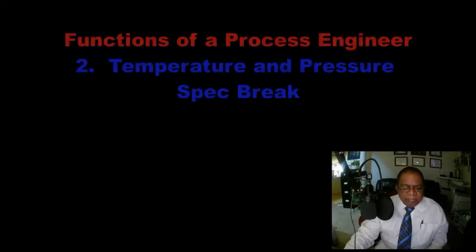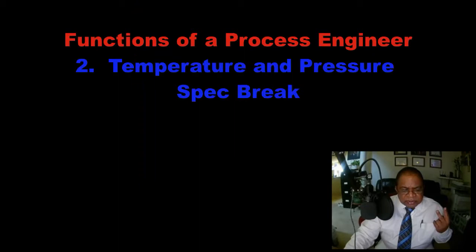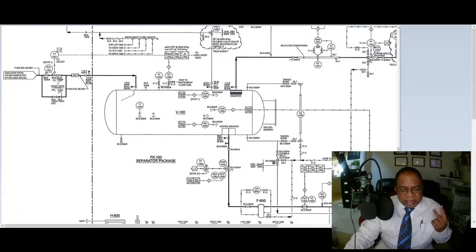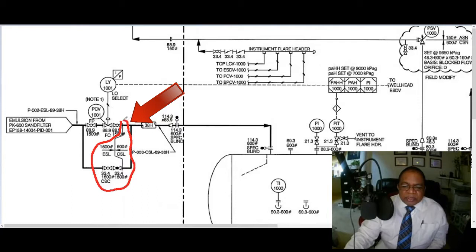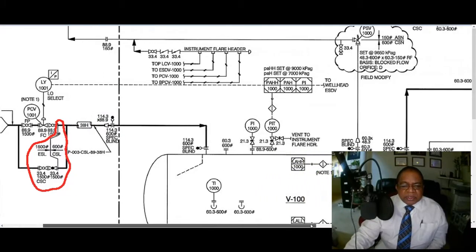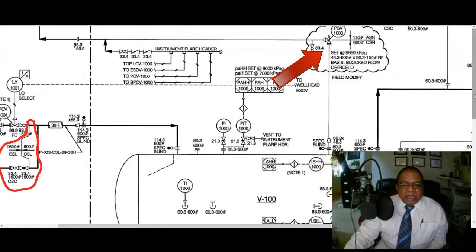Functions of a process engineer — number two: locating spec breaks on the drawing. The second most important aspect a process engineer will identify is the exact point in the system where there is a transition of temperature and pressure. These transition points are identified in the HYSYS simulation process. The process engineer's job includes interpreting HYSYS results and pointing the exact location on the drawings.